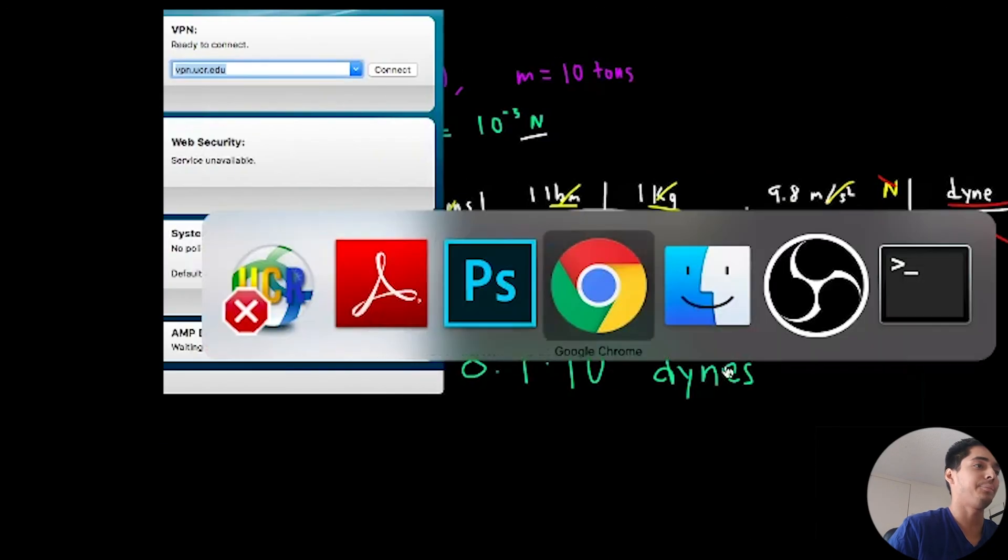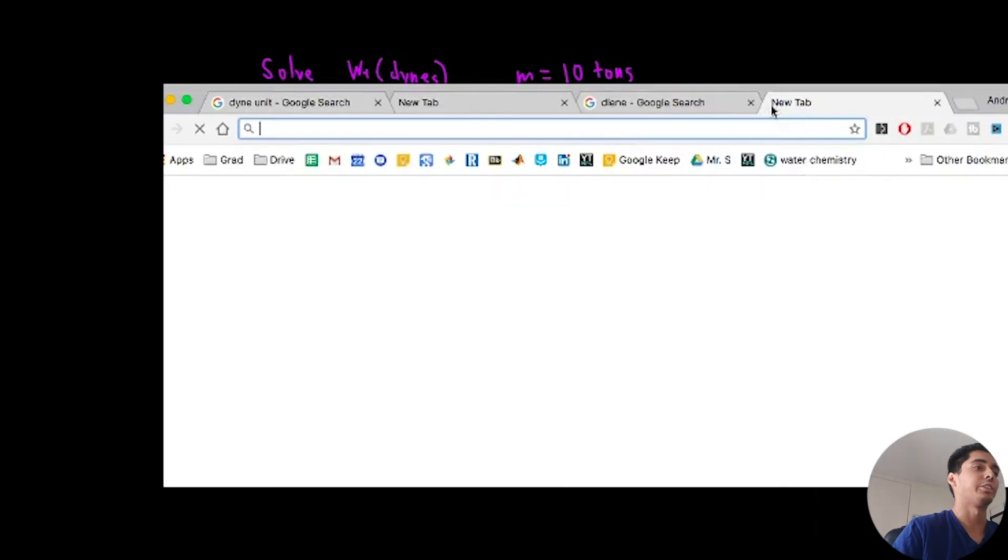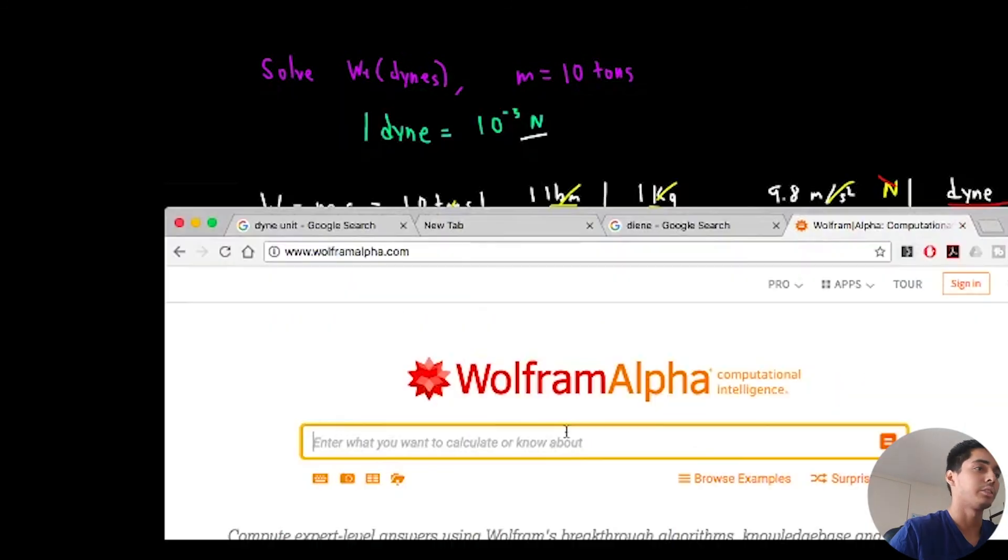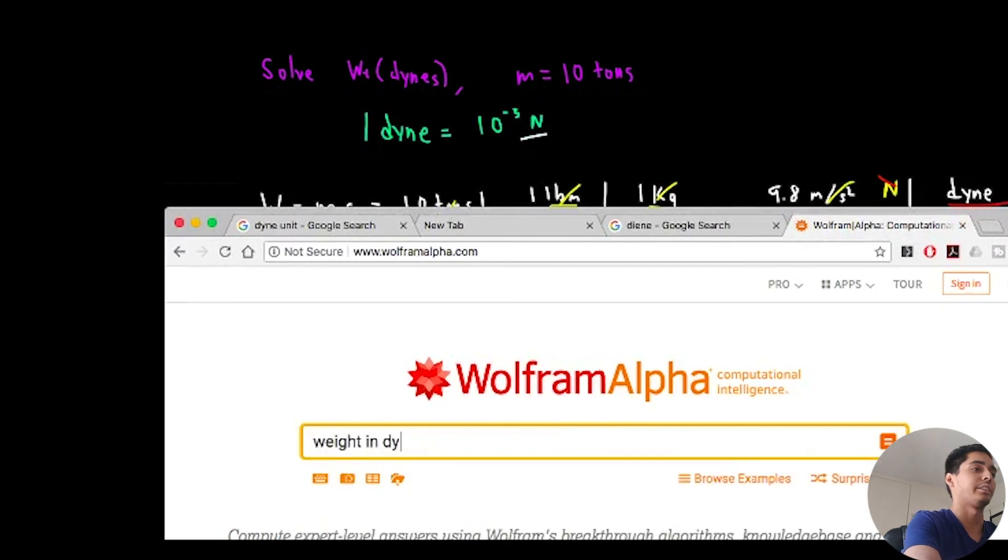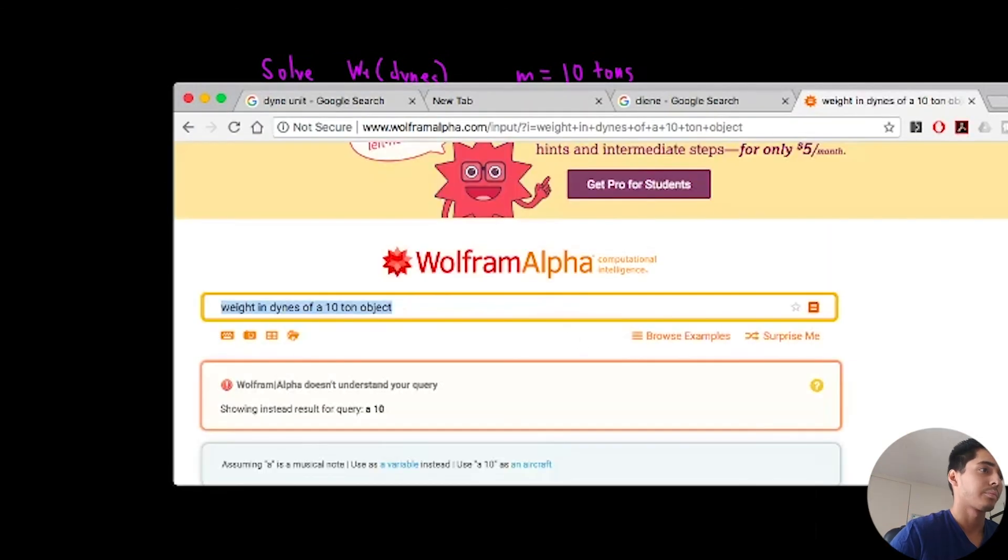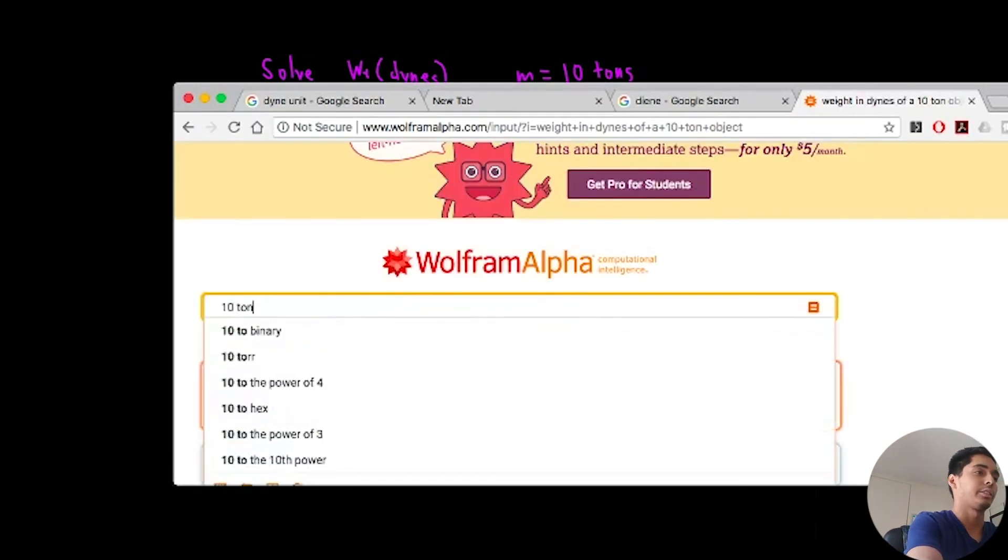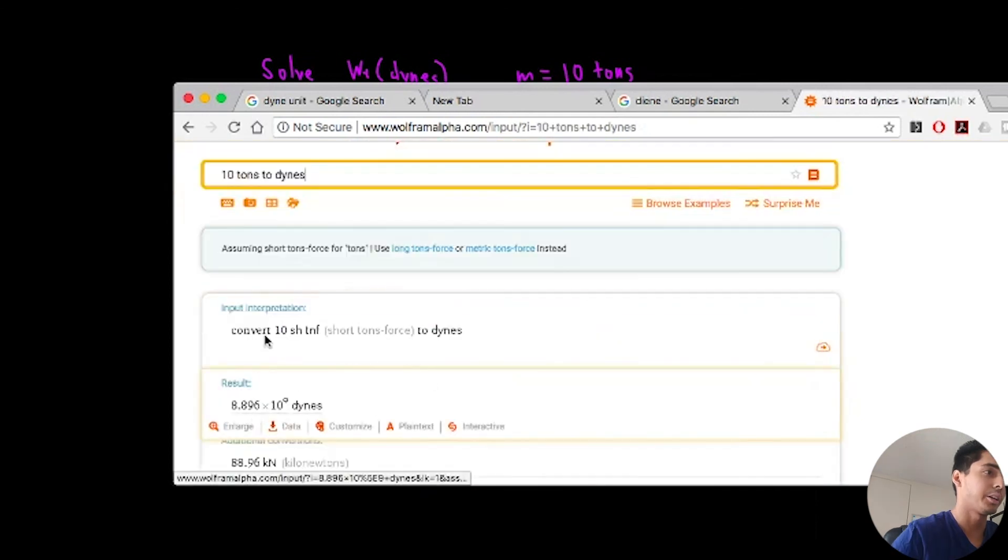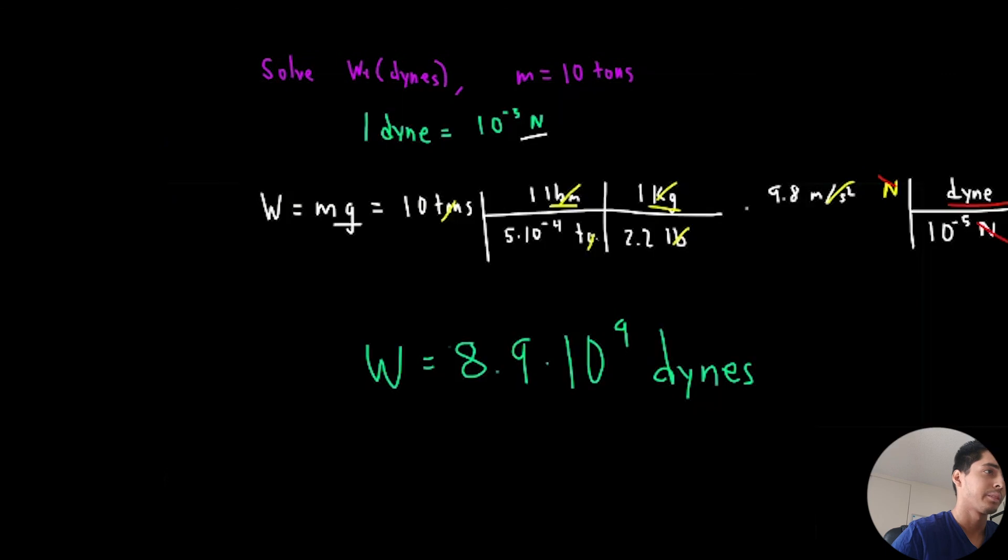We can check our answer via Wolfram because it's a unit conversion, so we can just type it in. Weight in dynes of a 10 ton object. Computing. I didn't like that. 10 tons. Yay! We got it. I was nervous because I actually haven't solved this problem until right now. So I'm glad.